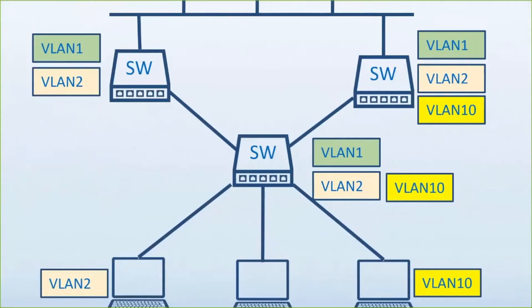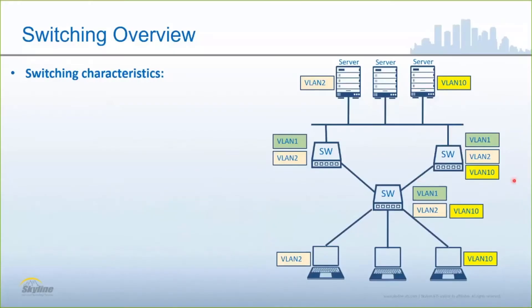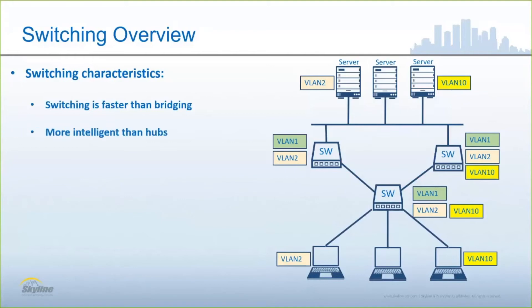We have a hierarchical design with an access layer at the bottom and a distribution layer above it, which can also extend into a core layer combining several distribution layers together. Switching is faster than bridging and has a higher degree of intelligence, and obviously far more intelligence than hubs, which effectively repeat anything that they receive.